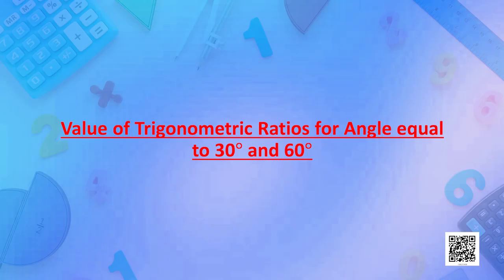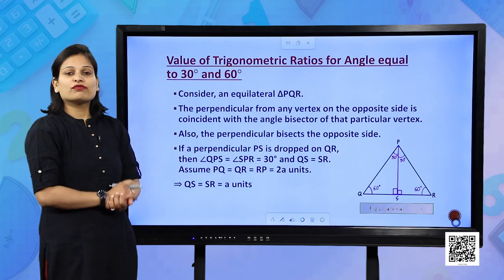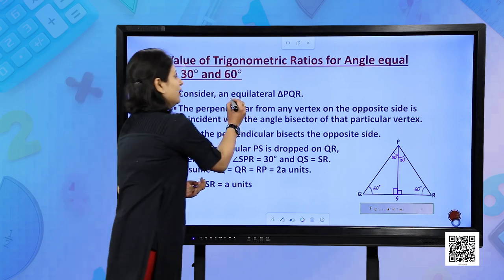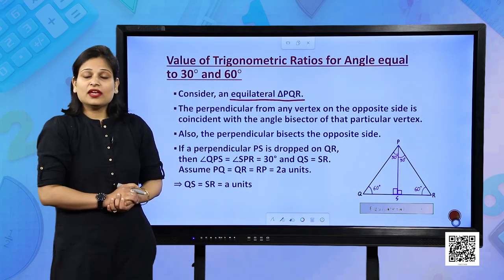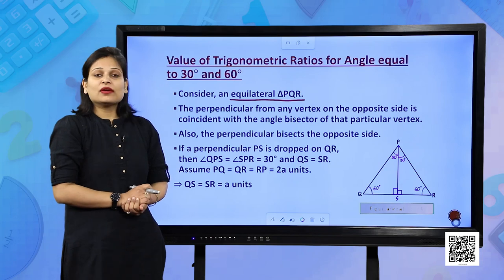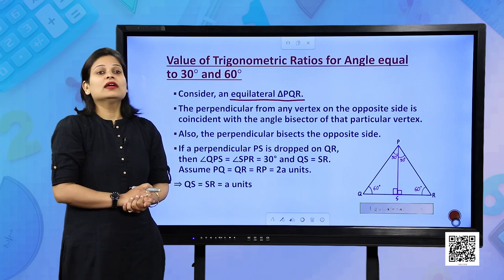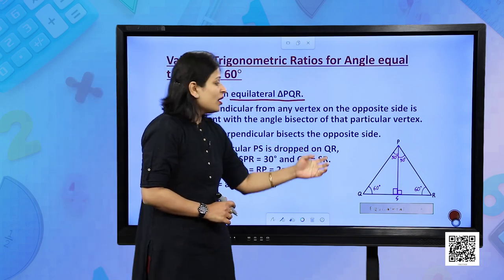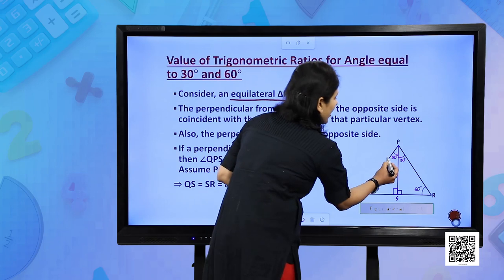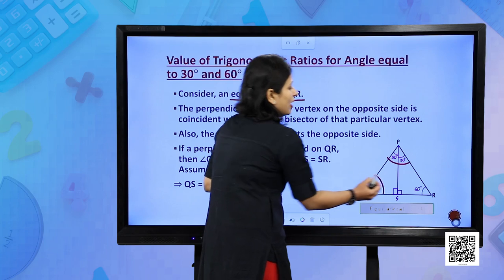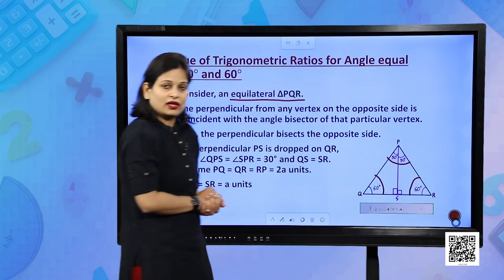Now for trigonometric ratios of 30 degree and 60 degree, we need to construct an equilateral triangle PQR. In an equilateral triangle, all sides are equal and all angles are equal to 60 degree, so angle P, angle Q, and angle R are each 60 degree.